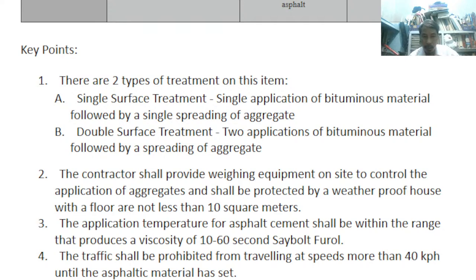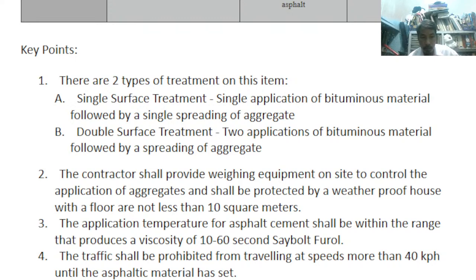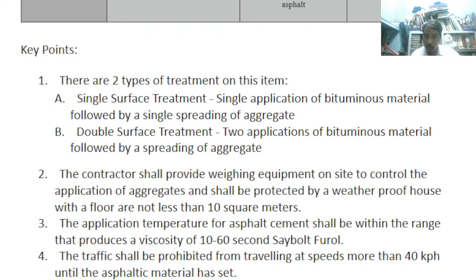Number two: contractors shall provide weighing equipment on site to control application of aggregates, protected by a weatherproof house with a floor of not less than 10 square meters — about the size of a parking space. Number three: application temperature for asphalt cement shall be within the range that produces a viscosity of 10 to 60 seconds, measured in Saybolt Furol units. Number four: traffic shall be prohibited from traveling at speeds more than 40 kph until the asphalt material has set.